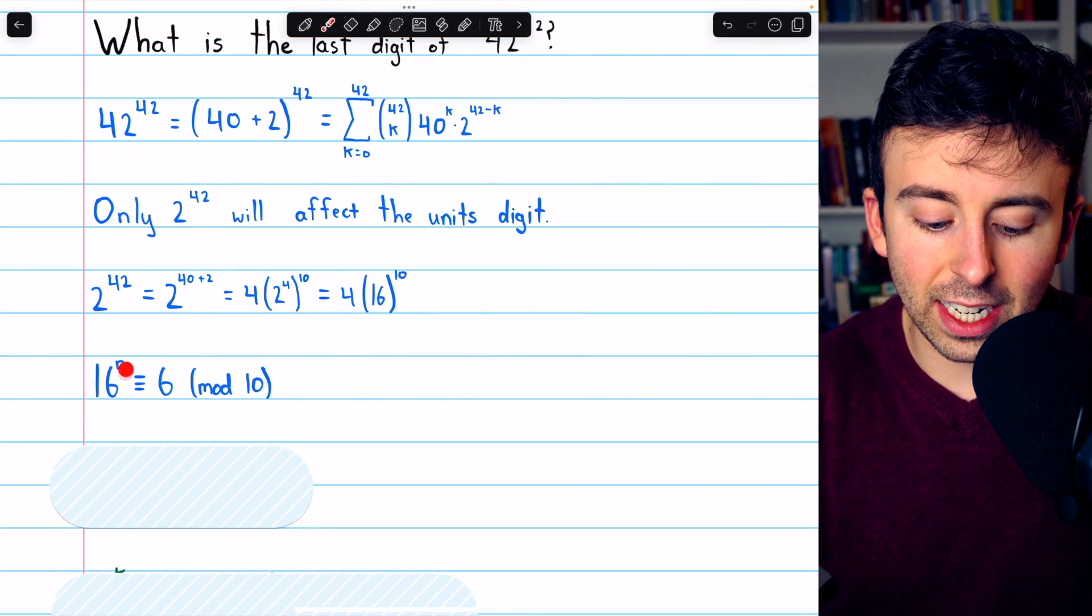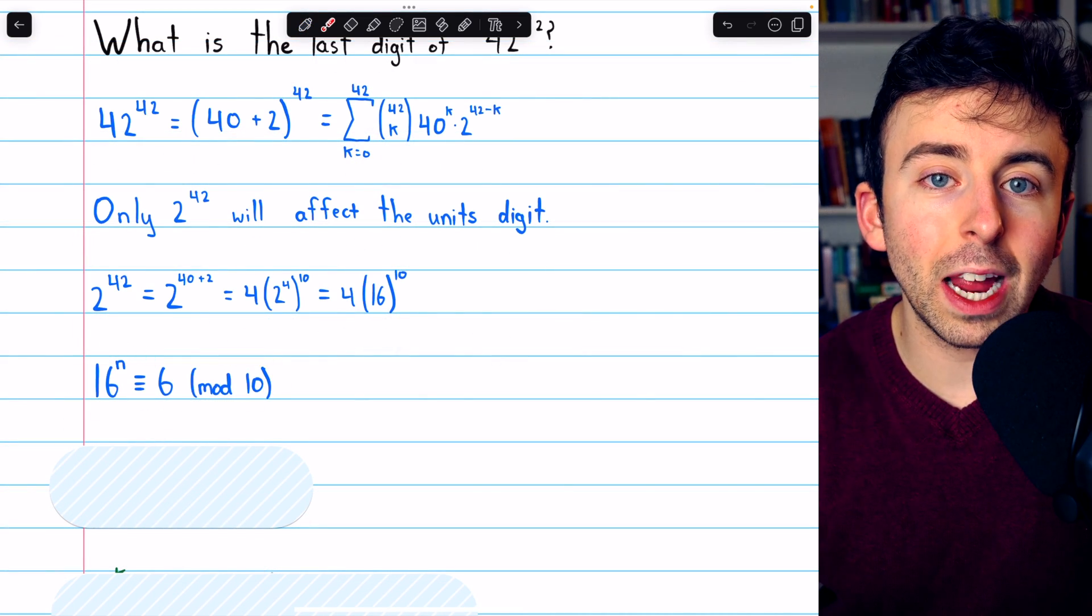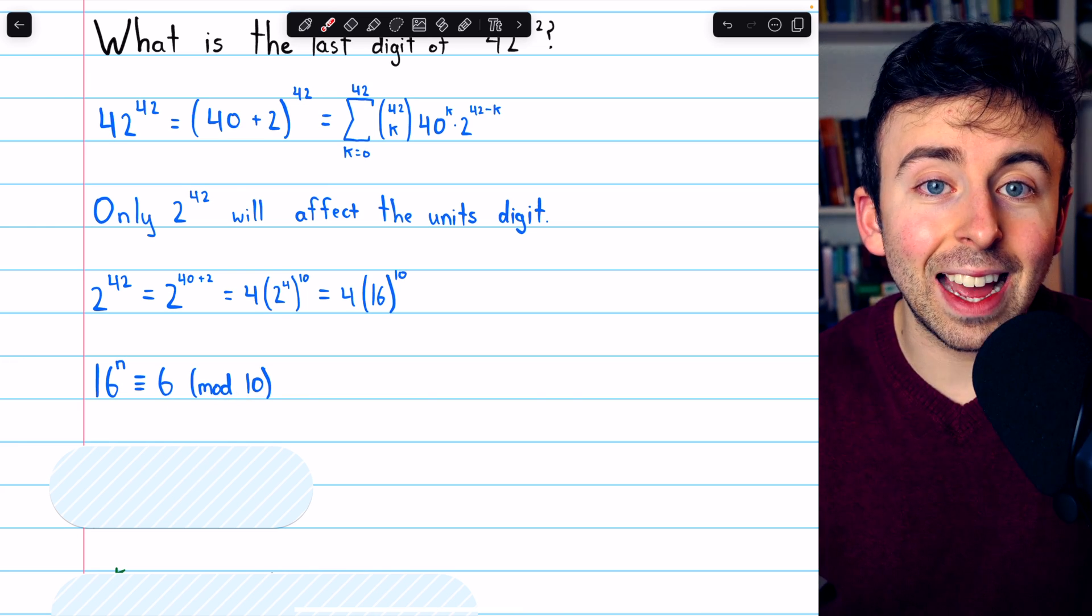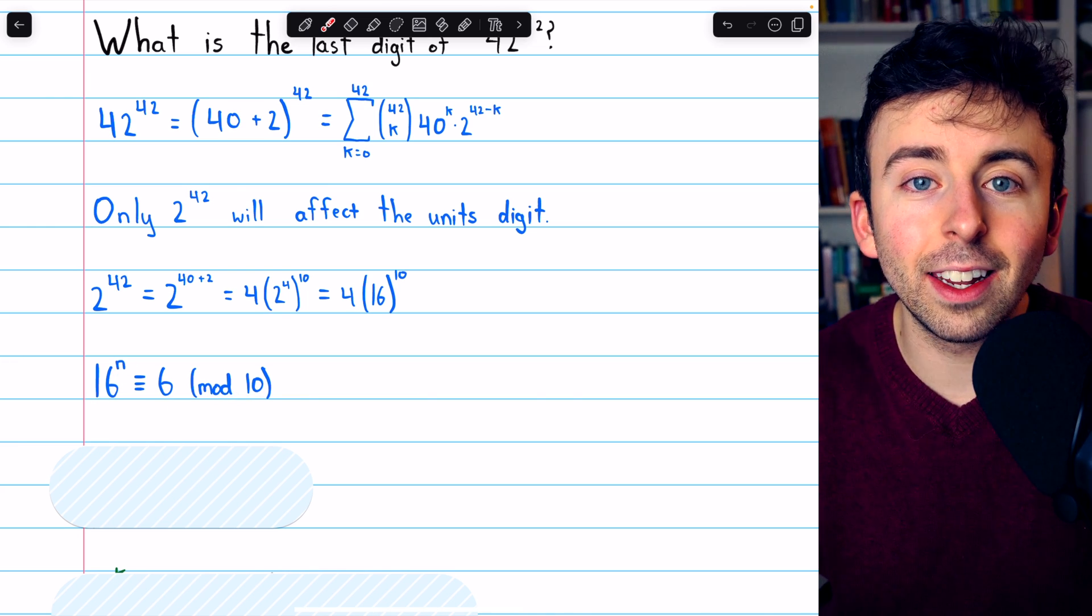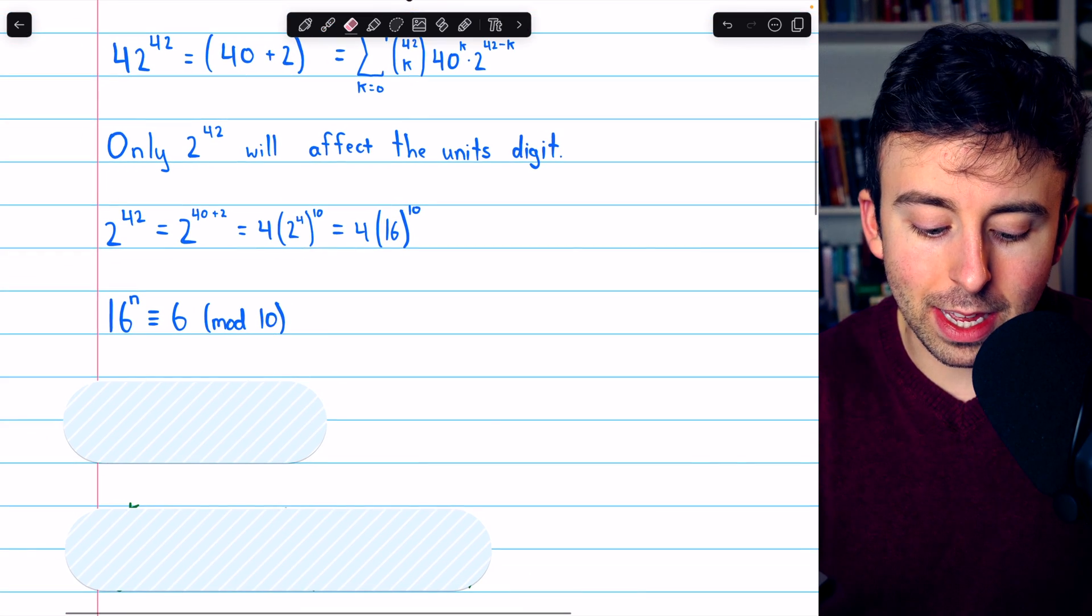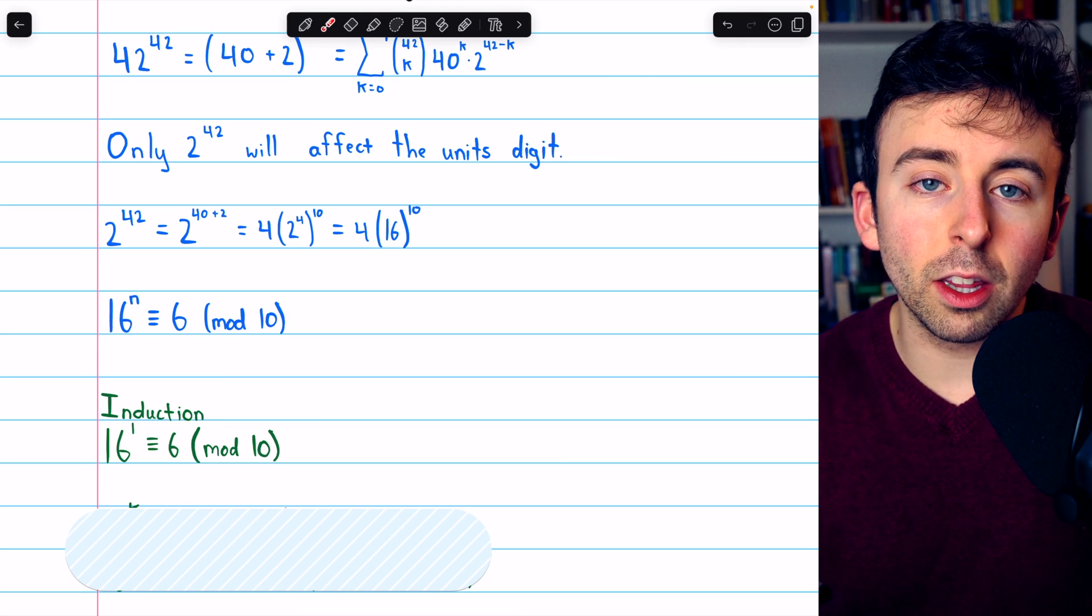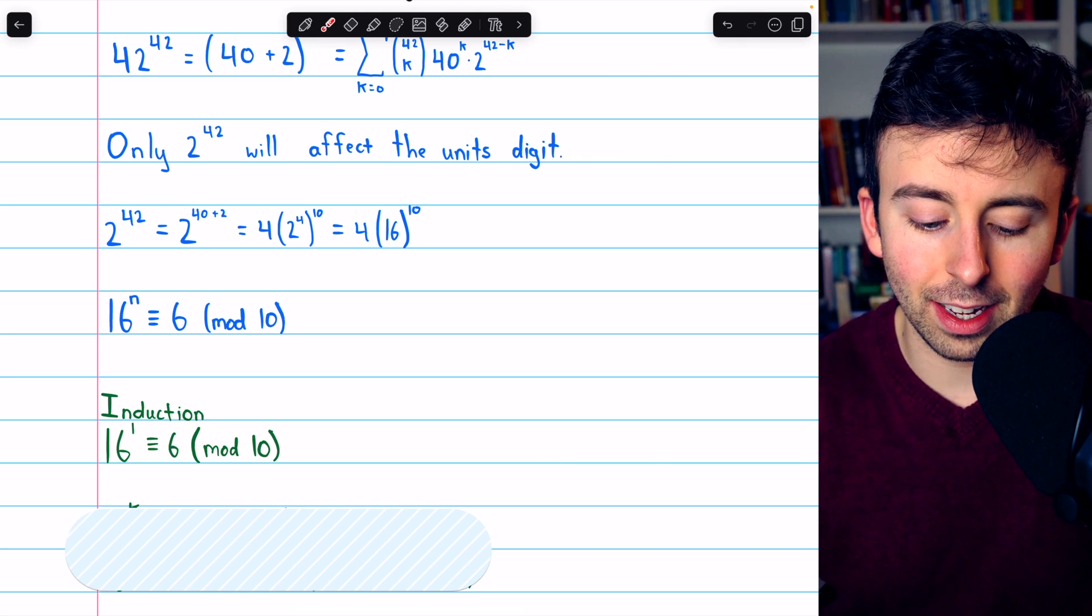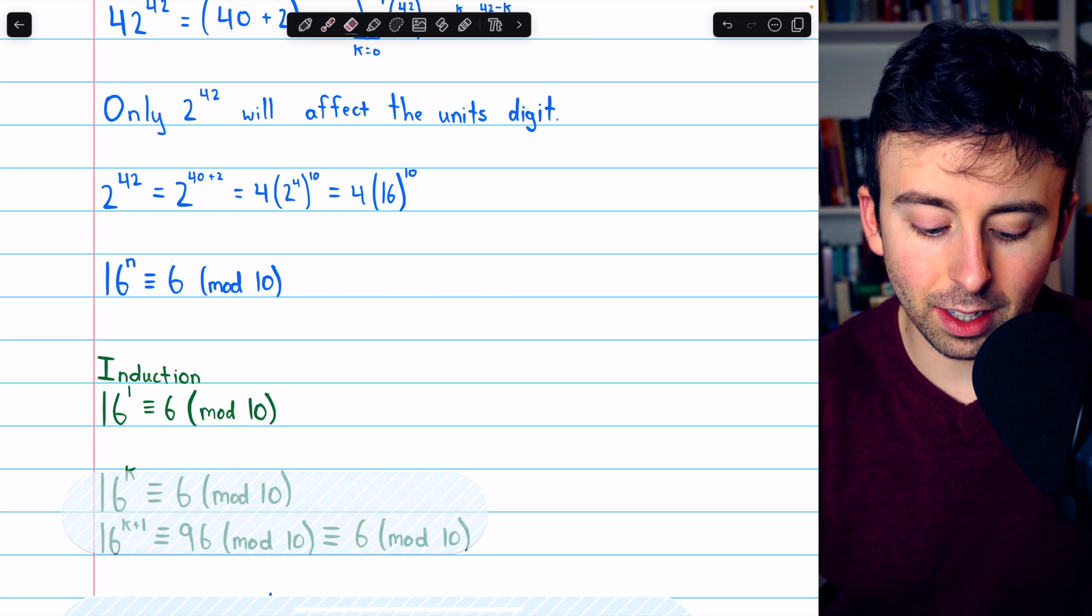So, we're proving this, that 16 to the n, for any positive integer n, is congruent to 6 mod 10, which means the last digit of 16 to the n is always 6. We can prove this quickly by beginning with the basis step. 16 to the 1, obviously 16, which is congruent to 6 mod 10. 6 is the unit's digit.